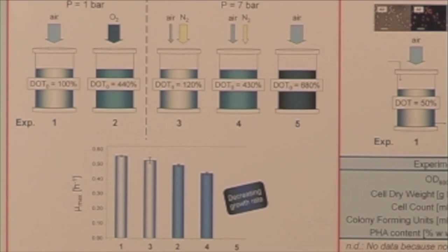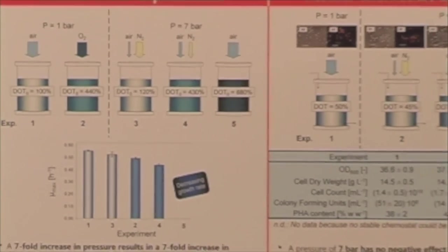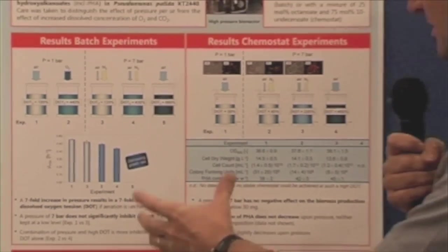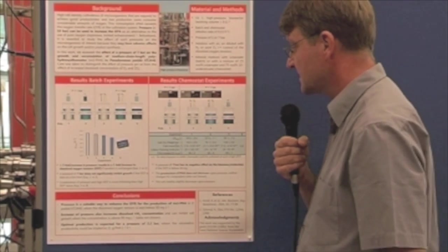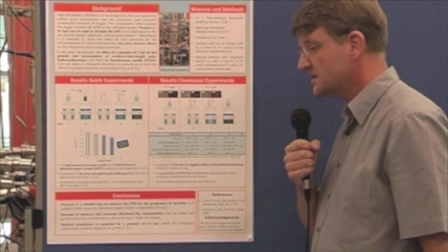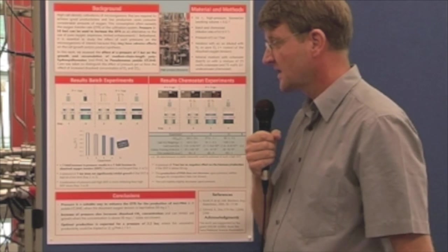We did first batch experiments, and we could observe that when we increase the pressure to 7 bar, we can achieve a dissolved oxygen tension of 680%. However, this has an influence on the specific growth rate. We could observe that under such high oxygen tensions, we have a decrease in the growth rate. Nevertheless...